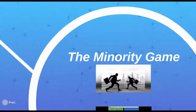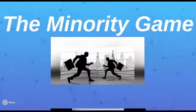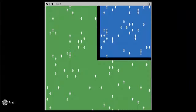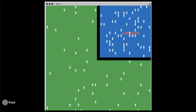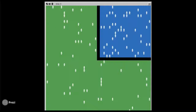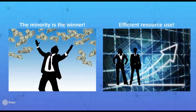A model called the Minority Game has gained traction in helping us better understand the dynamics of competitive behavior. This model tracks a population of agents who repeatedly decide whether to pursue a limited resource based on past behavior of the population. Because agents are rewarded when their decision is in the minority, they learn which decision-making strategies help them succeed. Over time, this leads to more efficient resource use.